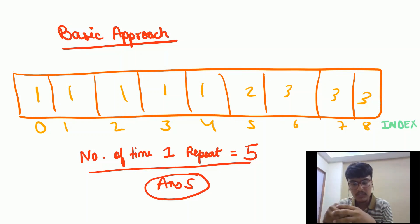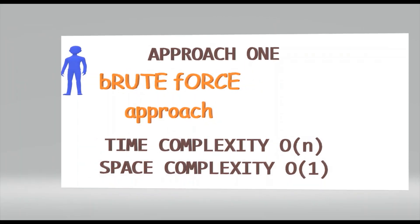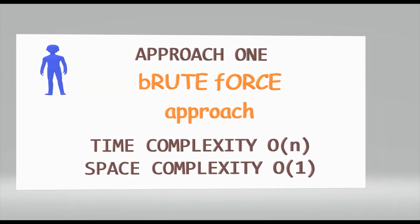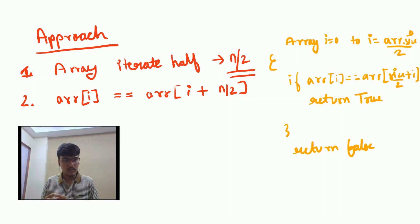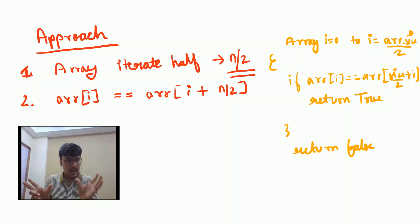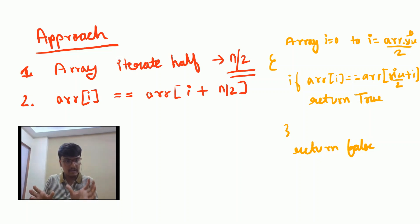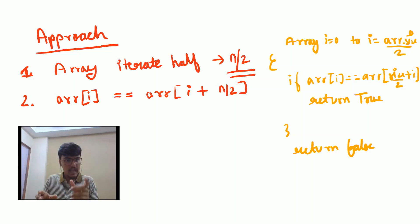Now we will be discussing two steps. The first step: suppose we have an array divided into two parts — the first half and the second half. We will be iterating only the first half of the array. The reason is that, as the problem statement says, we want to find a majority element repeating for a frequency of more than half the size of the array. So if we don't find an element in the first half, there is no chance of finding it in the second half.